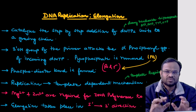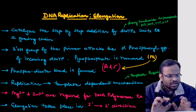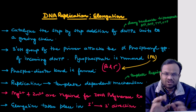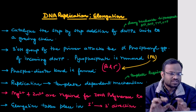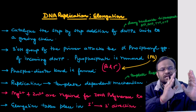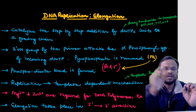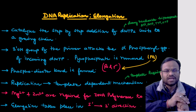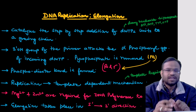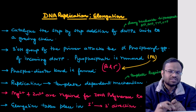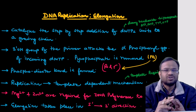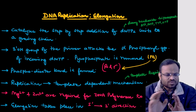The addition of nucleotides in a stepwise manner is called elongation, which we are covering in today's lecture. DNA elongation basically involves the catalysis or step-by-step addition of dNTP units to a growing chain. Primase has already synthesized the primer, and new dNTPs — ATP, GTP, TTP, CTP — are added to this primer gradually onto the growing chain.